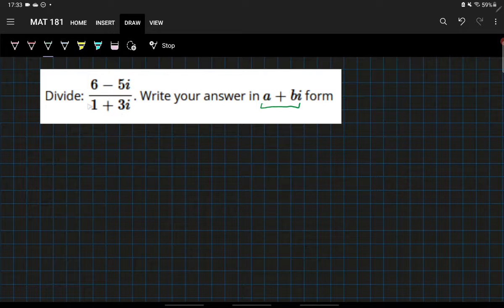So in order to do that, we want to turn this denominator into just a real number. We can use conjugates to turn the denominator into a real number by multiplying by the denominator conjugate.